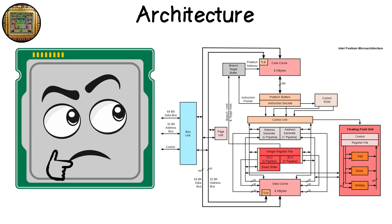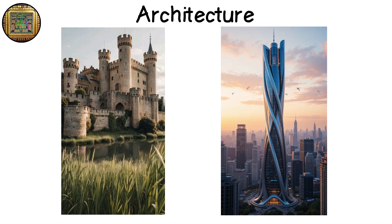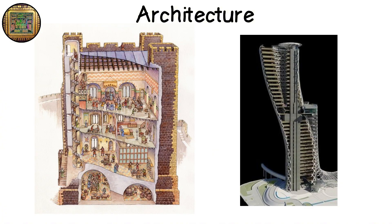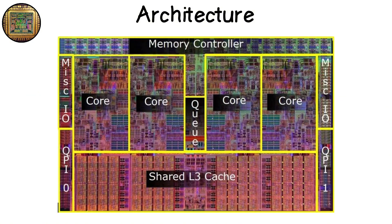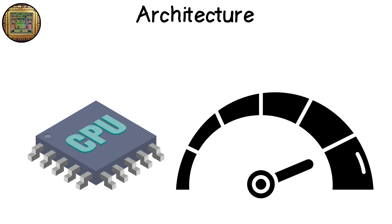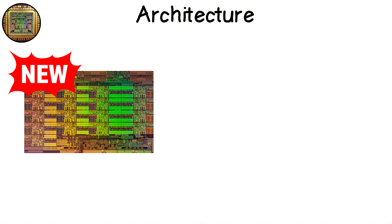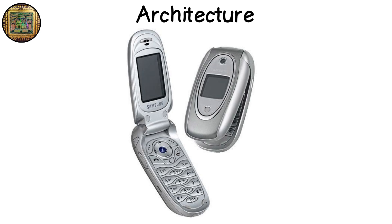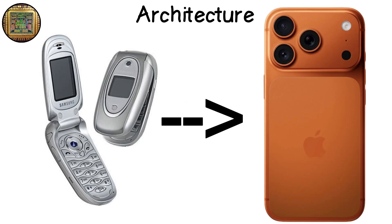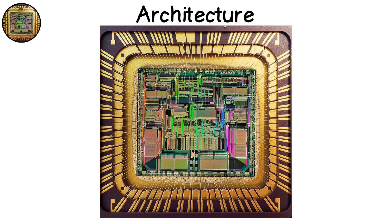Architecture is the blueprint of how the CPU thinks — the difference between a medieval castle and a futuristic skyscraper. Intel, AMD, and Apple all design unique CPU architectures that change every few years. These blueprints decide how instructions travel, how data moves, and how efficiently power is used. It's not just about speed, it's about smart speed. New architectures usually mean smaller, faster, cooler chips that do more with less — like upgrading from an old flip phone to a sleek smartphone. The art of architecture is invisible, but everything depends on it.